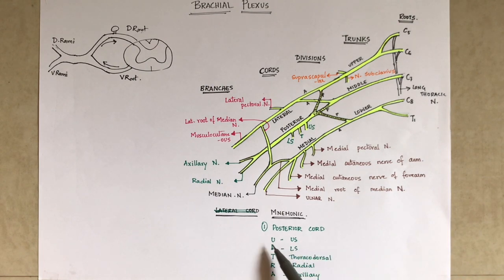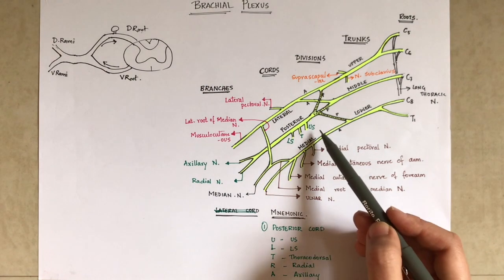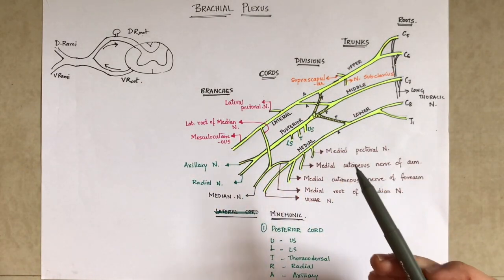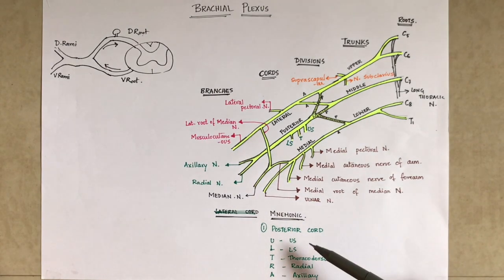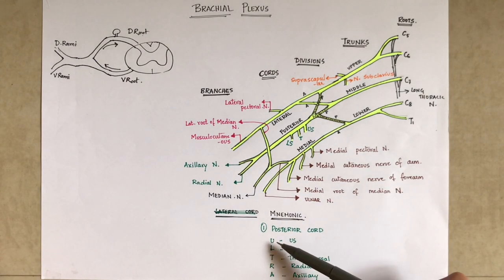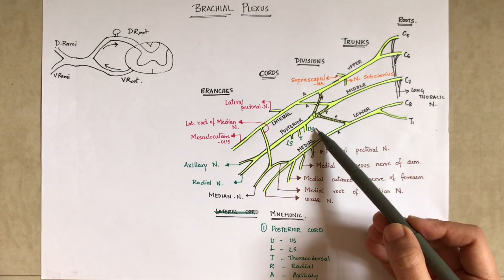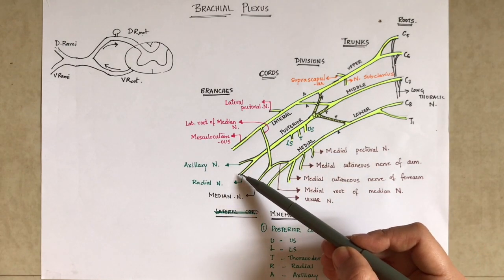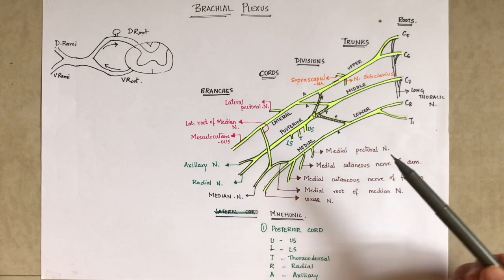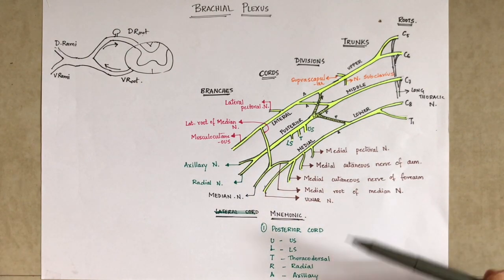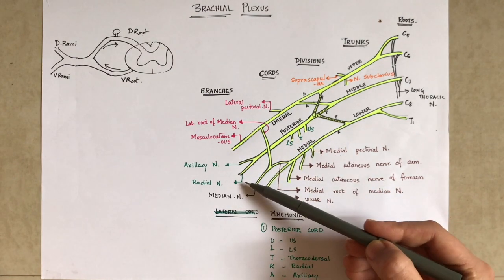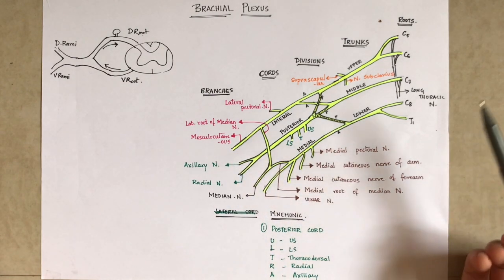From the posterior cord there are five branches, for which there is a simple mnemonic: ULTRA. U is for upper subscapular, L for lower subscapular, T is for thoracodorsal nerve, R is for radial nerve, and A is for axillary nerve.